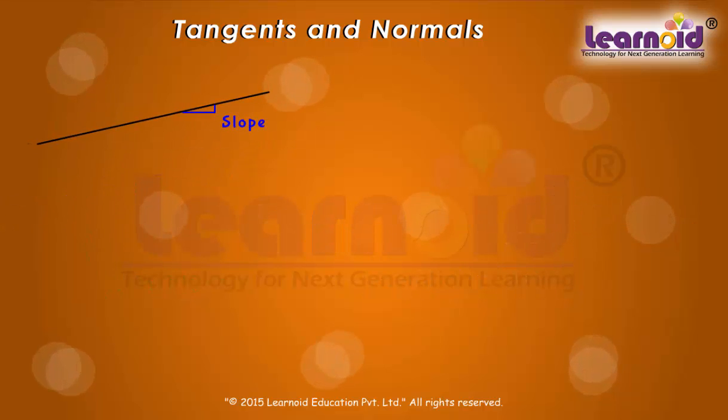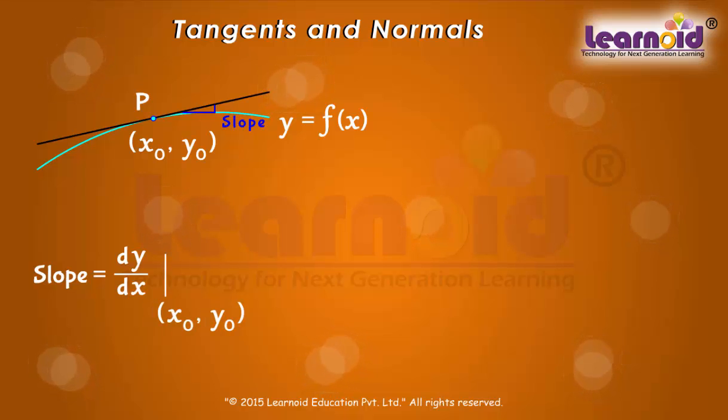The slope of the tangent to the curve y = f(x) at the point (x₀, y₀) is given by dy/dx at (x₀, y₀) or f'(x₀).